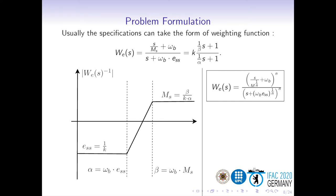In order to apply H-infinity optimal control to perform closed-loop shaping, the first step is transforming the specifications into a cost function. The bounds over the sensitivity frequency response are written in terms of a continuous transfer function — usually first-order ones are good enough. The idea is to obtain a sensitivity function which is always below the defined weighting function.